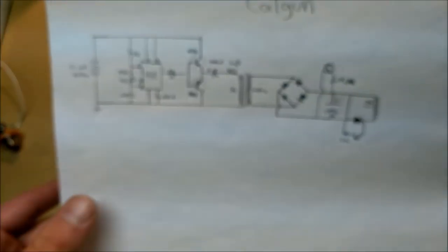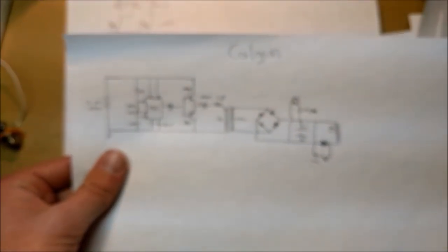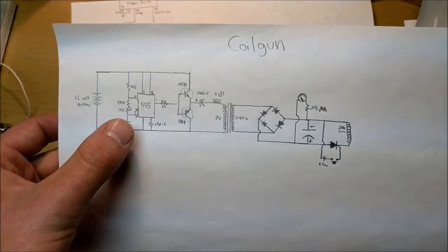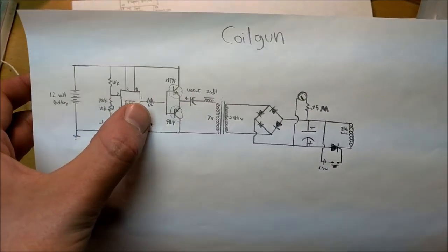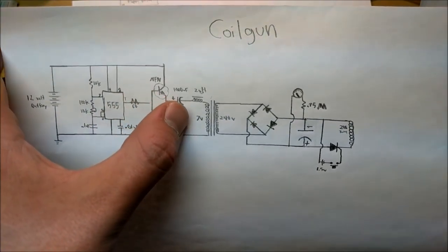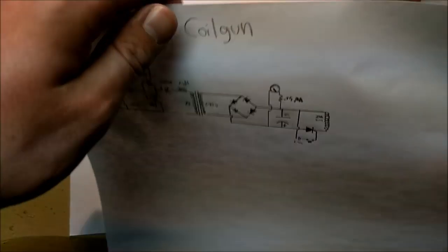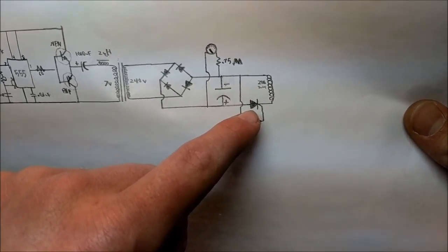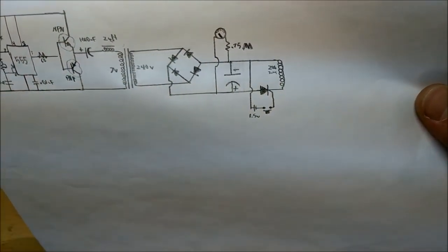We've got a coil gun. I made the coil gun a while back. This coil gun has a 555 timer circuit with two NPN and PNP transistors to drive a transformer. And that charges some capacitors that can be released via this silicon controlled rectifier into a coil of turns.